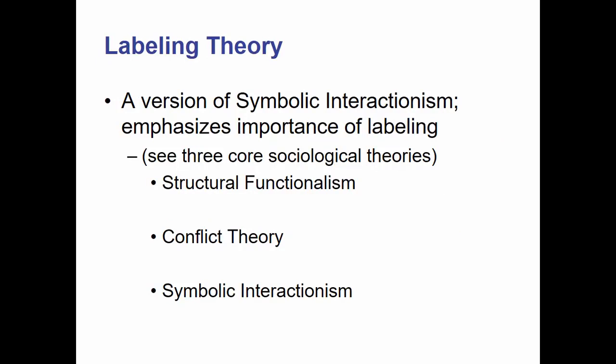Labeling theory within the three core sociological perspectives falls pretty clearly within the symbolic interactionist perspective. Quick refresher: structural functionalists view society as a web of interconnected social structures. Conflict theorists state that society is basically an interconnected web of ways that the powerful take advantage of the powerless. Symbolic interactionists are most interested in how symbols have meaning to people.